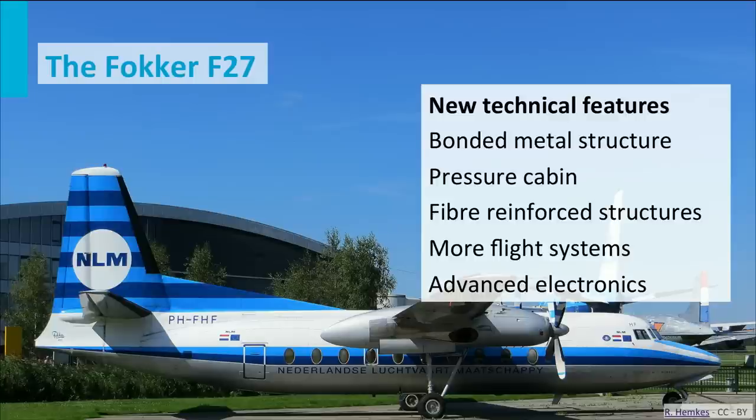This aircraft can be seen on this picture. The Fokker Friendship had a number of new features like metal-bonded structures, already some composite parts, and a pressure cabin. Such a pressure cabin was needed to fly at high altitudes, above 3000 meters.